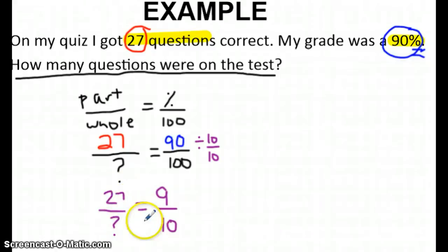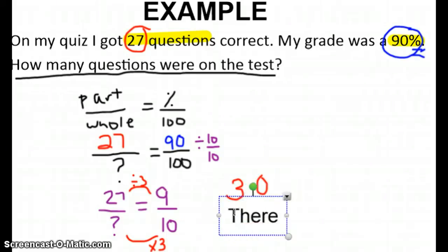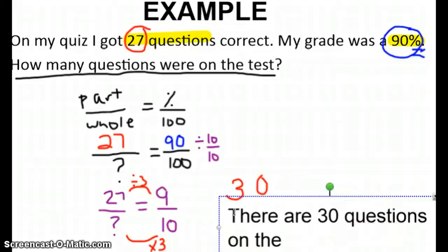So 90 over 100 is equivalent to 9 over 10, because we scaled down by 10. The reason why we scaled down is so we could easily see if these two match up somehow. So 27 to 9, we know that we could scale down or divide by 3. So in this case, we're going to do the inverse, which is multiply by 3, because we're going this way. So 10 times 3 is 30. So that means that there are 30 questions on the test. The whole is 30.